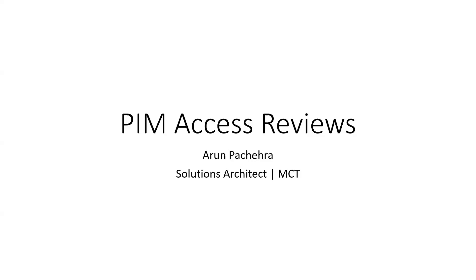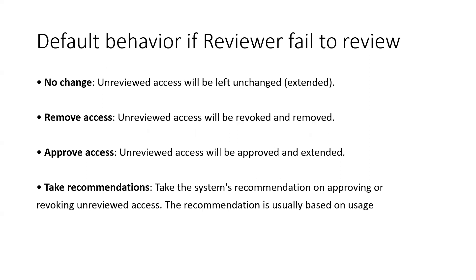Let's see the options available when the designated reviewer fails to complete the review — it's quite possible, since it involves human beings. In that scenario we have these options and the assignment will follow accordingly. The first is 'no change' — unreviewed access will be left unchanged, whatever the access is it will remain the same. Then there is 'remove access', 'approve access', and 'take a recommendation' — which refers to the system's recommendations.